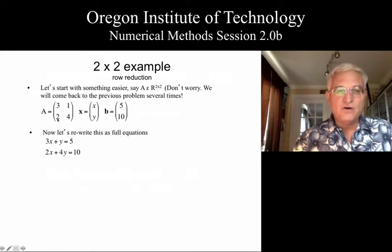Or if I take the second row, I get two times x plus four times y, forming the left side of the second equation, and I set it equal to ten.